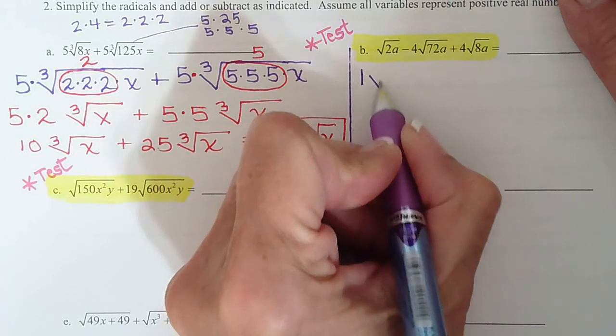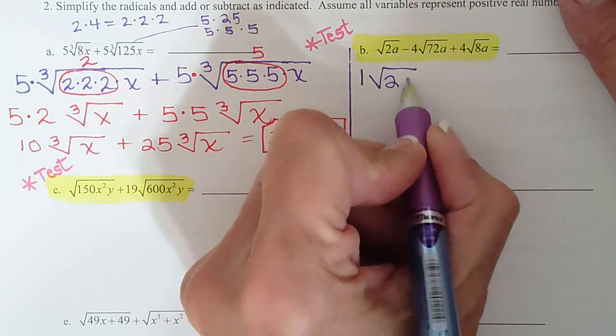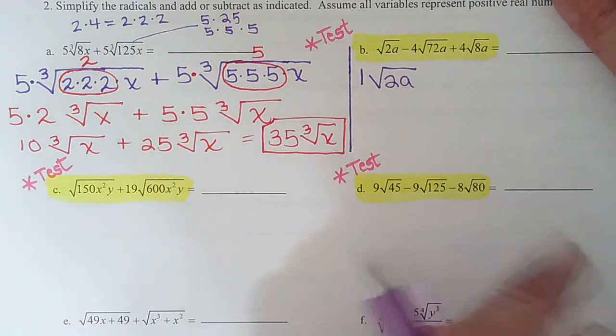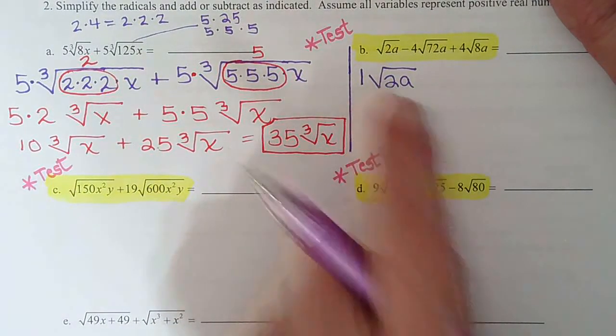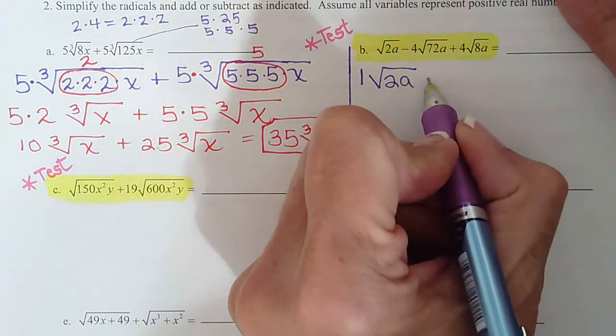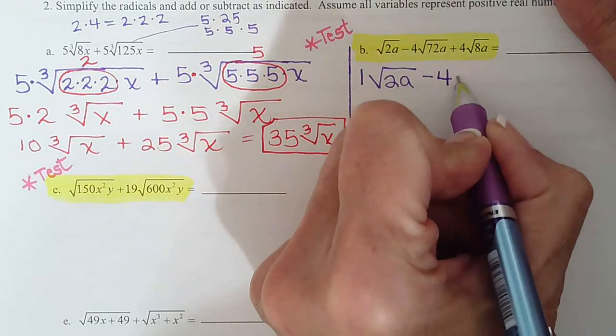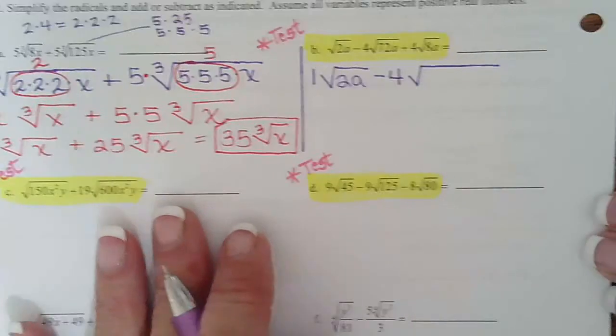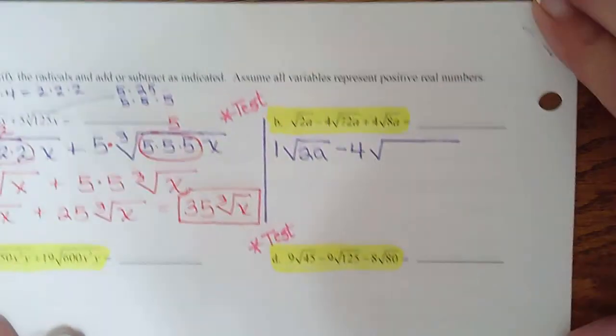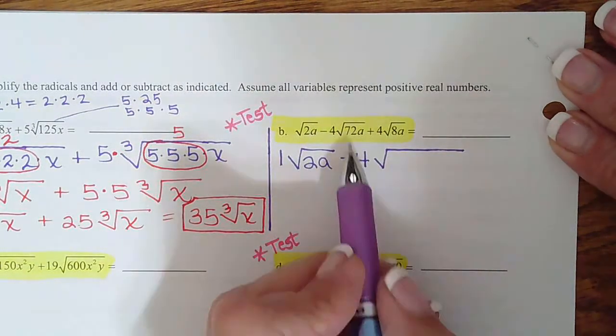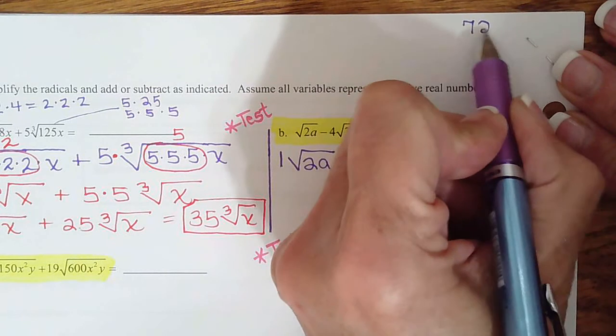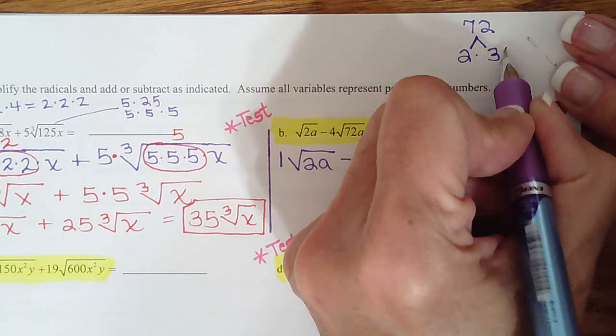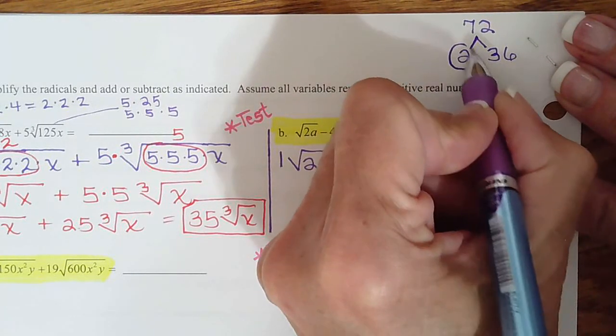Because you're going to be adding like terms. And I know one of the ones on the test has a 1 in front too. So when you're adding like terms, you kind of want to know that's there. Okay, and then we have minus 4. And now we have to break down 72. So let's come over here to the side. Maybe up here. And let's do a tree for 72.